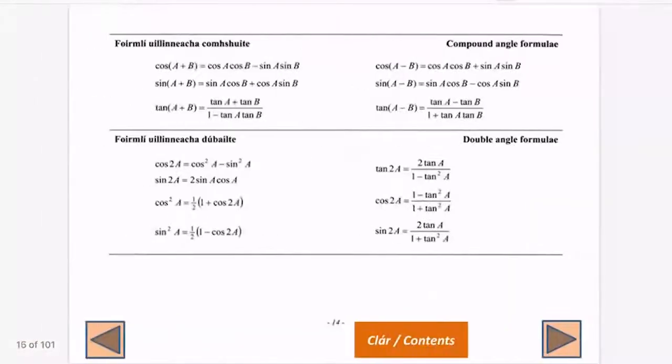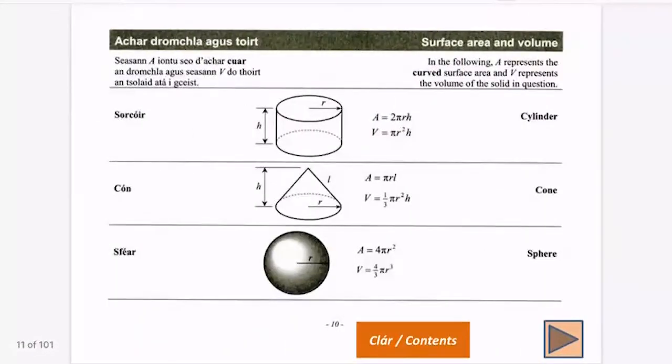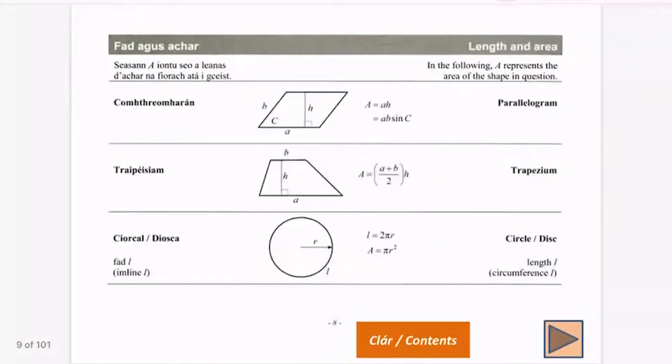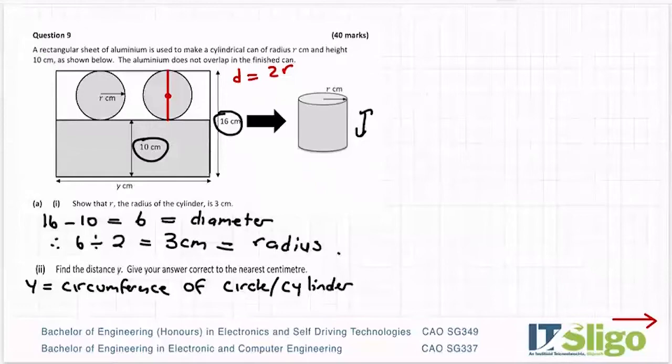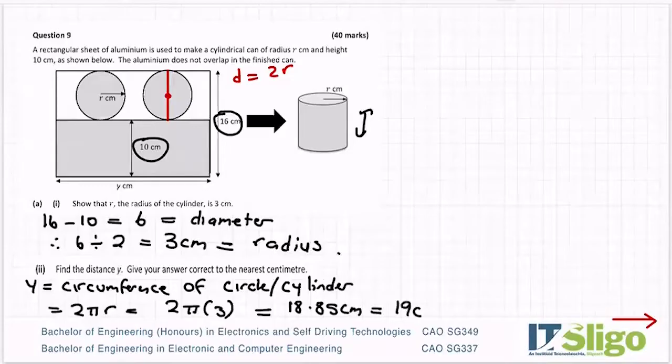Let's go to area and volume. You can see here I have two formulas. I have A for area and I have L for the length or the circumference. So 2 pi r is my circumference of the circle, which is all the outside. So 2 times 3 is 6 pi. Give your answer correct to the nearest centimeter. So I'm getting 18.85 centimeters for that. So it's 19 centimeters.